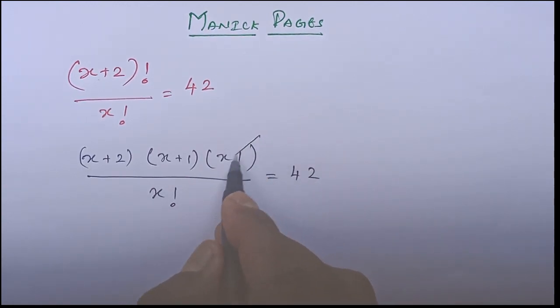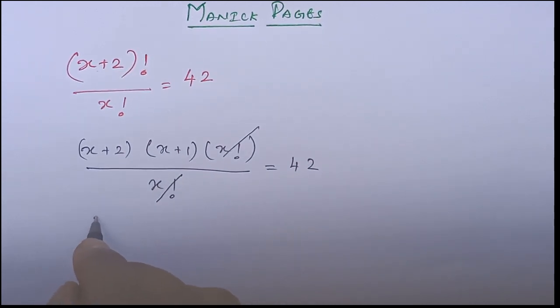Now in the numerator we have x factorial, in the denominator we have x factorial. So we can cancel that. So x plus 2 into x plus 1 is equal to 42.